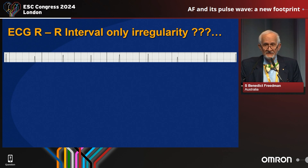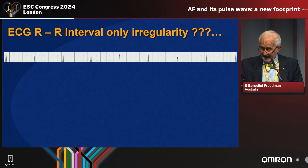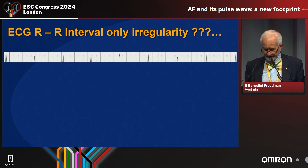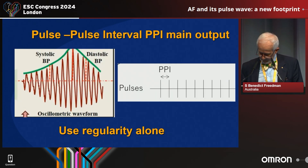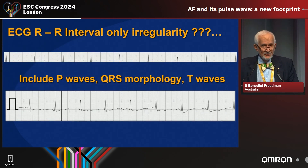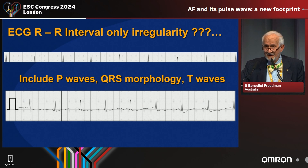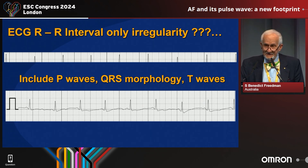But all of these use regularity or irregularity alone as the sole measure. If I can give you an analogy — here's an ECG. If we just do the peak-to-peak variability, we can see if it's irregular or not. But do you think this is clever? Do you want to throw away the P waves? Do you want to throw away the QRS morphology? Do you want to throw away the T waves as a way of diagnosing atrial fibrillation? It doesn't make sense.